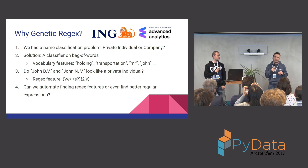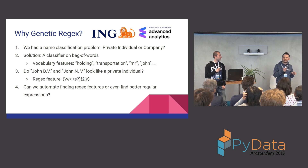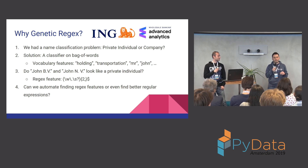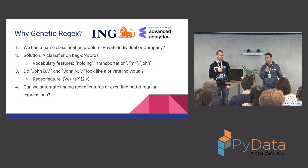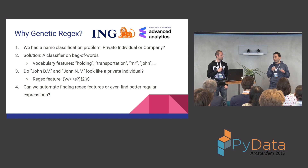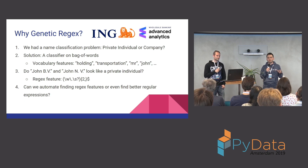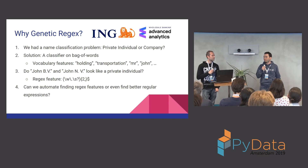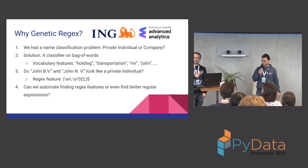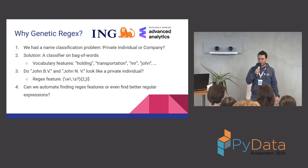At ING we have a text classification problem. In this problem we want to understand if a transaction name belongs to a company or a private individual. For this we have a very basic model — it is basically bag of words. We have some vocabulary features which are not working well.